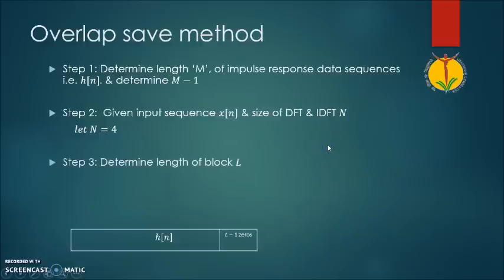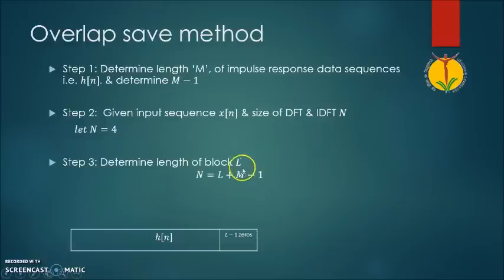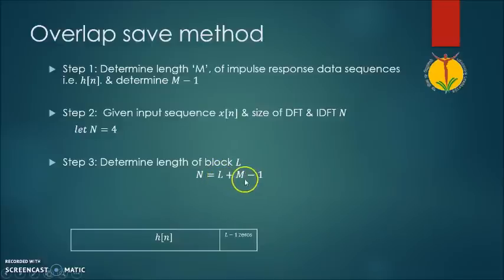Finally, for whatever input data sequence is there, we have to form its block of length capital L. To determine the length of the block, we can use the formula N = L + M - 1. So here L is the length of the block, M is the length of the impulse response, and by using this formula we can determine the length of the block.